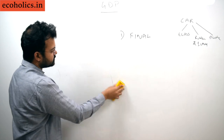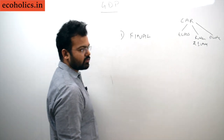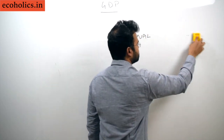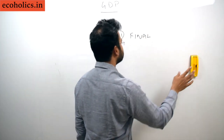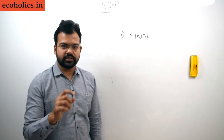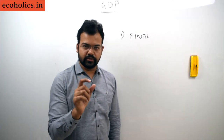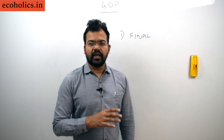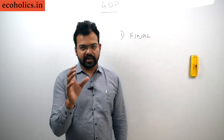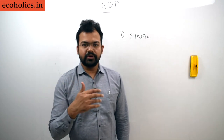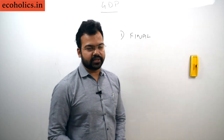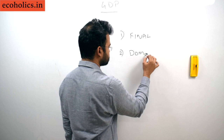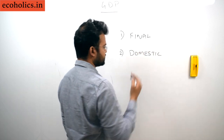Under intermediate goods, we do not calculate their value in the calculation of GDP. We have to deduct the value of these intermediate goods. The definition says it is the value of all the final goods and services produced within a domestic territory.